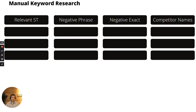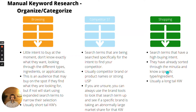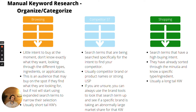Competitor names always get their own column while I build things out, then I eventually move them under the negative phrase column. After I have everything narrowed down to what I believe are my relevant root keywords, I then further narrow according to buying intent.